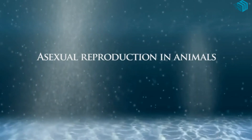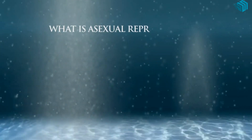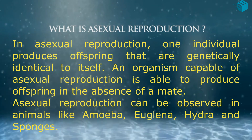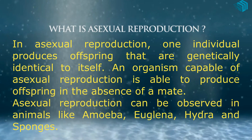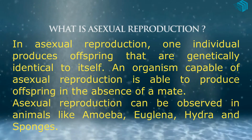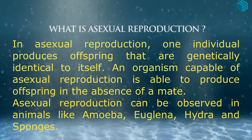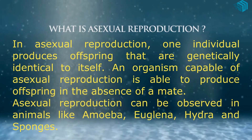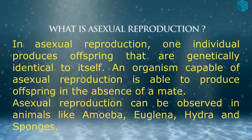Asexual Reproduction in Animals. In asexual reproduction, one individual produces offspring that are genetically identical to itself. An organism capable of asexual reproduction is able to produce offspring in the absence of a mate.